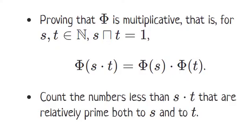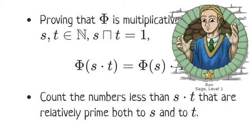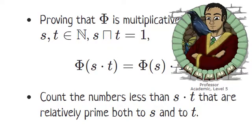From stage one, we know that we can calculate phi of s times t by counting the numbers less than s times t that are relatively prime to both s and t. In subsequent stages, we actually count those numbers, and I'm going to illustrate the process by showing how it works for specific numbers. So, who would like to pick values for s and t that are relatively prime? Eight and ten— how about eight and nine?